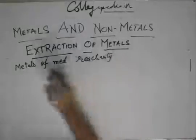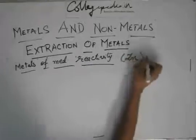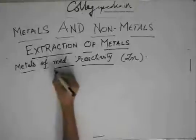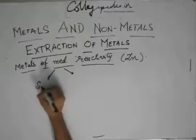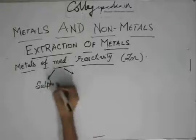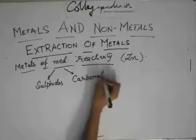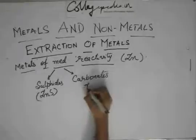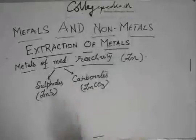Like zinc. We shall learn only about zinc. In metals of medium reactivity, they are grouped into further two types of ores. They can be sulphides or carbonates. It can be zinc sulphide, it can be zinc carbonate. We will deal only with zinc, but it extends to in general metals of medium reactivity.